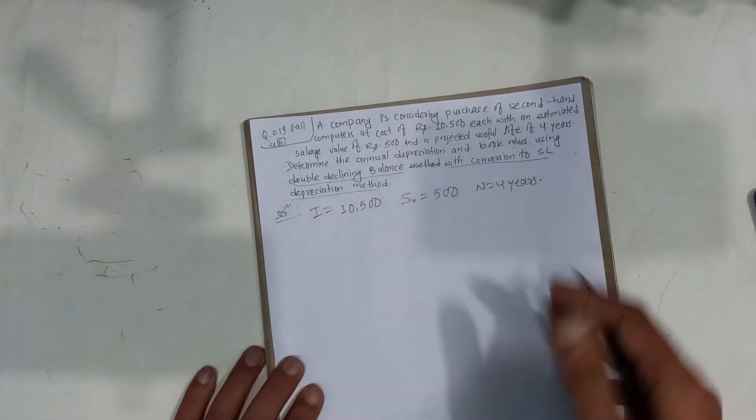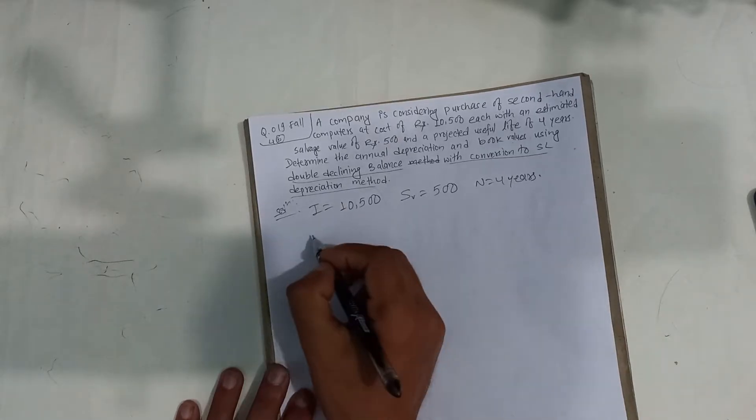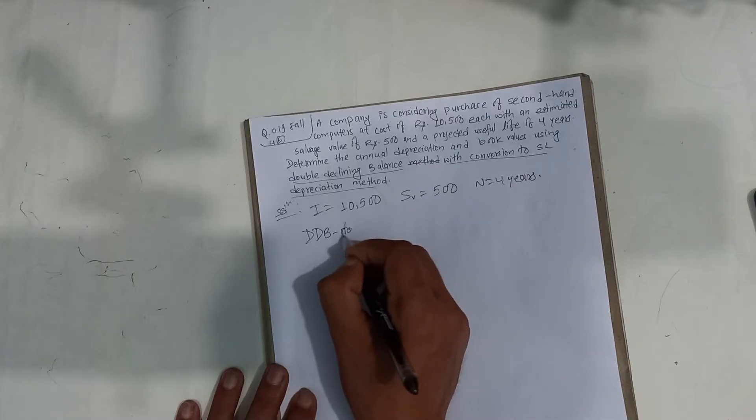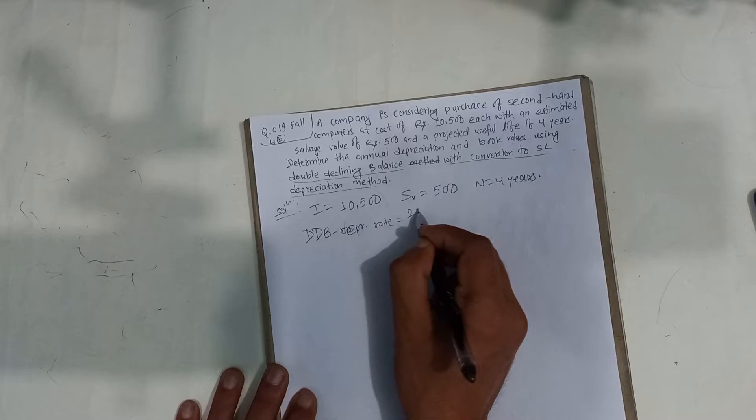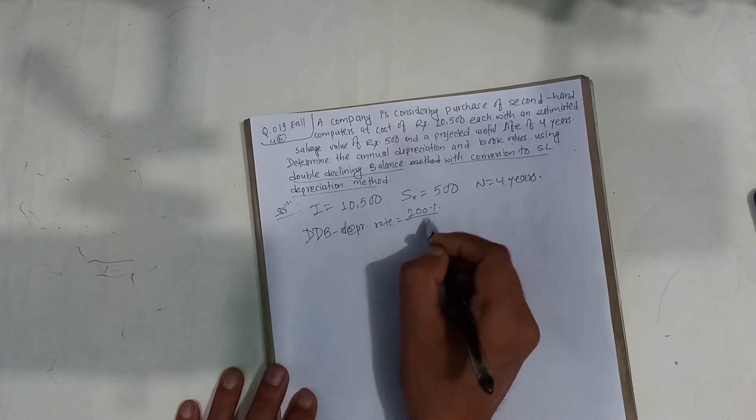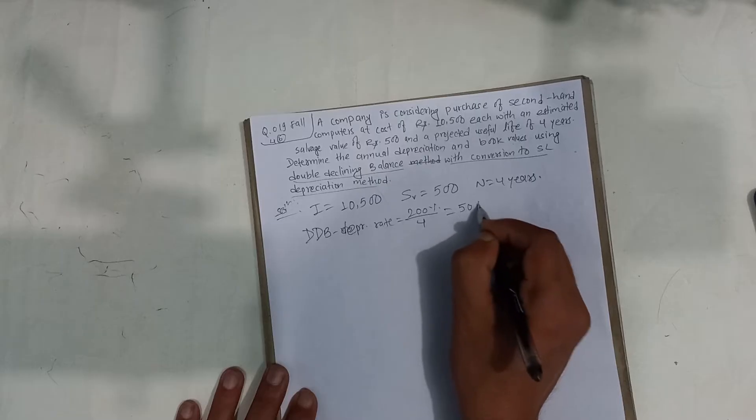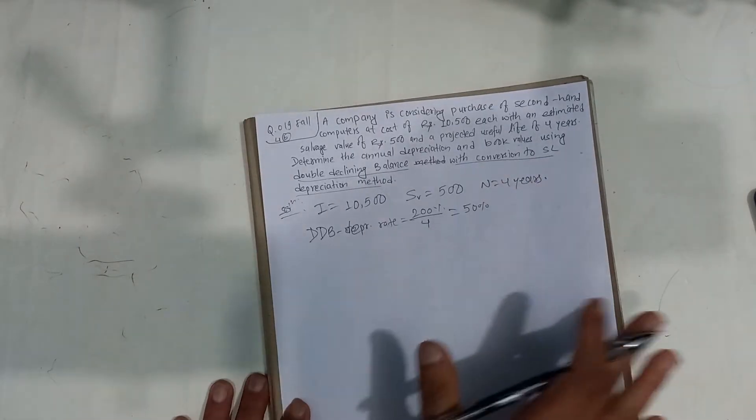Determine the annual depreciation and book value using double declining balance method. Depreciation rate is 200% divided by 4, which equals 50%.